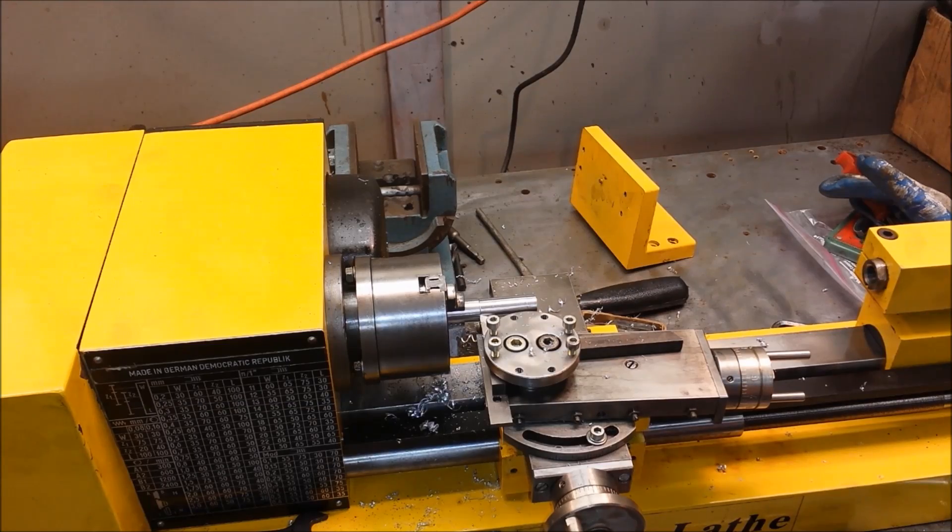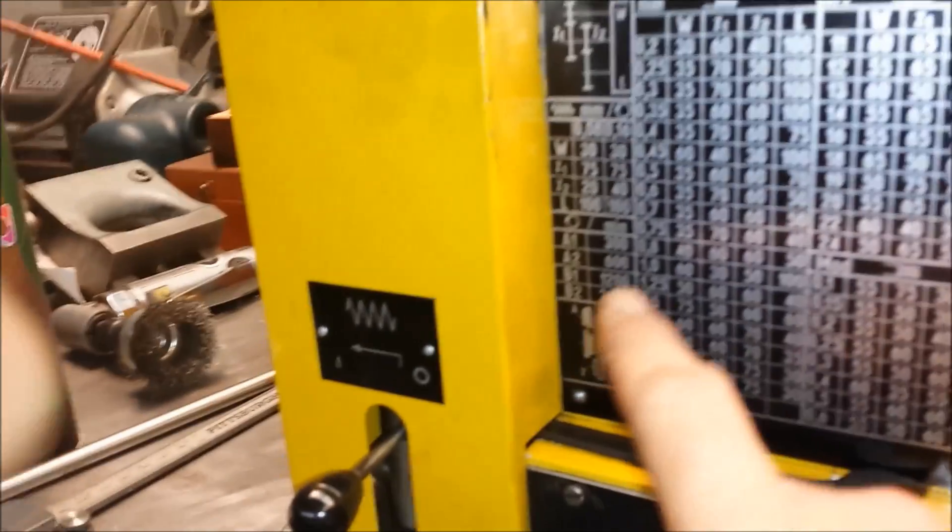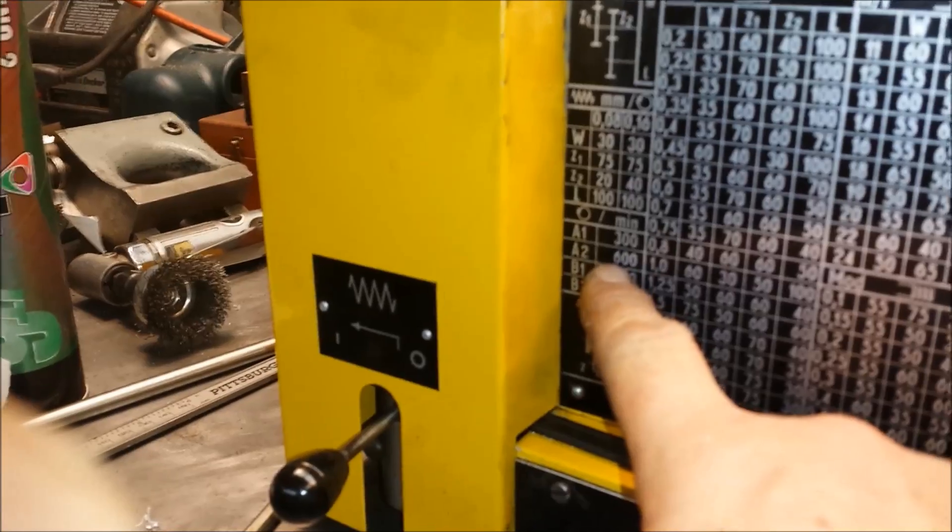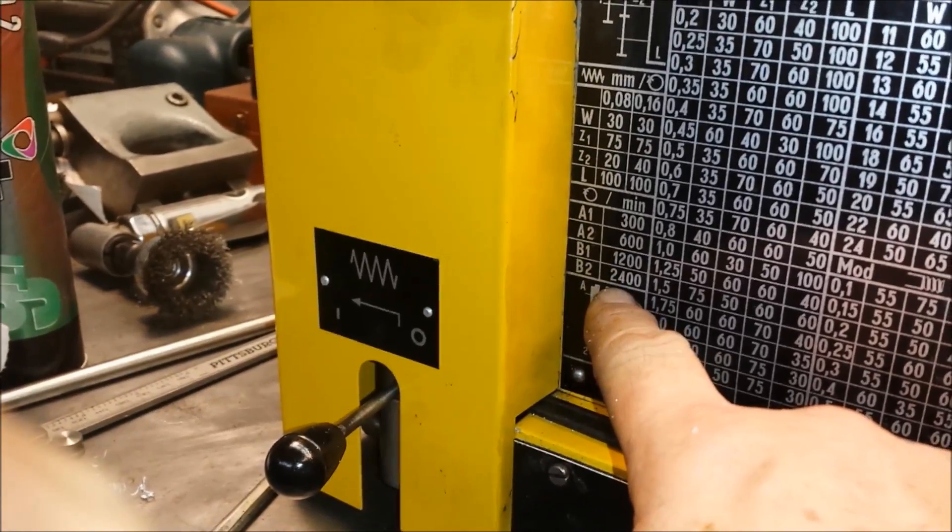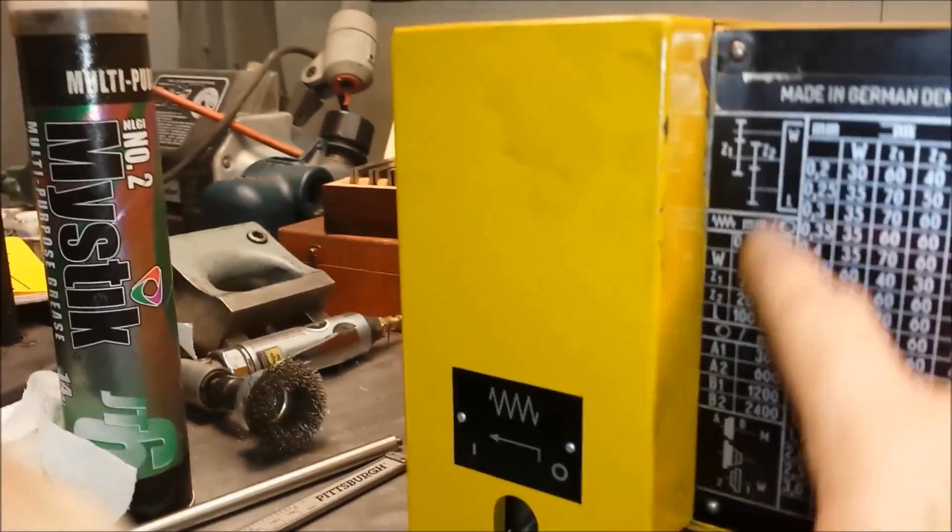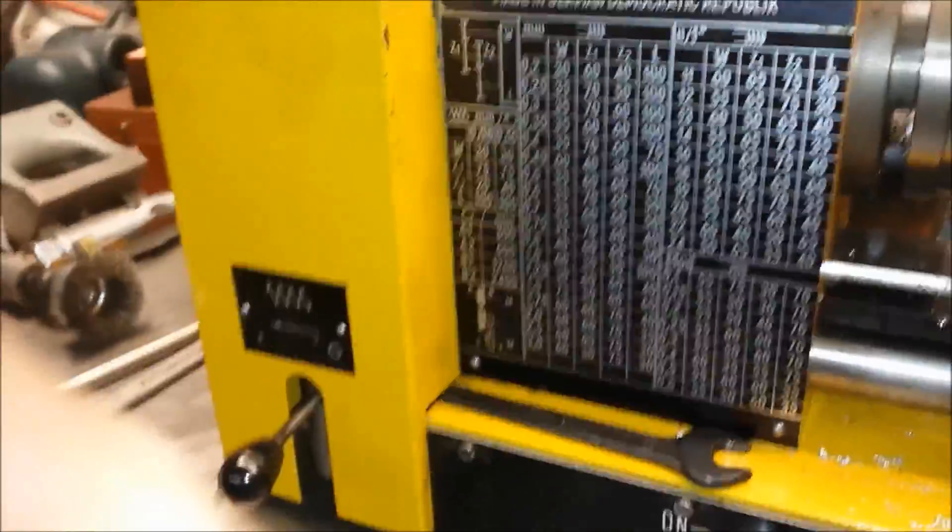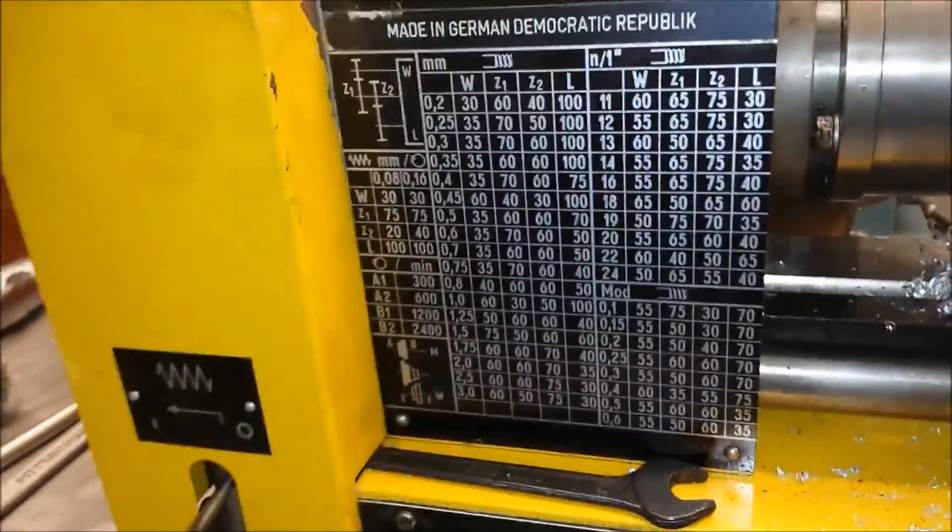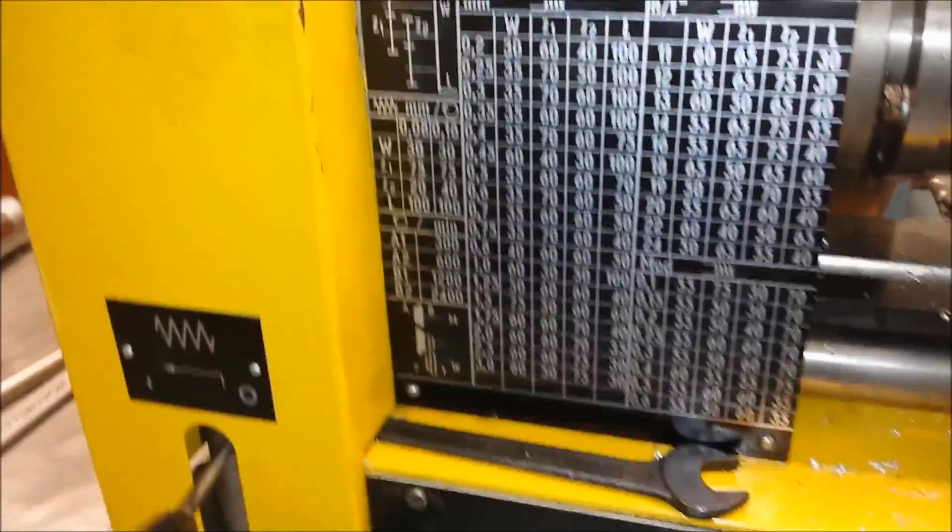I have a little Prozzi lathe here. It's got four spindle speeds: 300, 600, 1200, 2400. And it depends on how you set up the belts. There's two belts. So it'll go down as low as 300 and up as high as 2400 RPM.